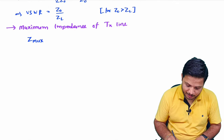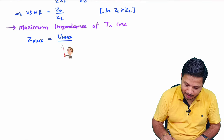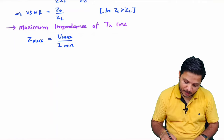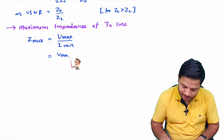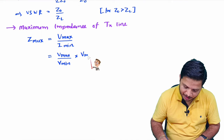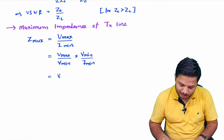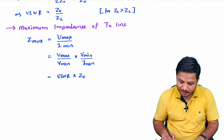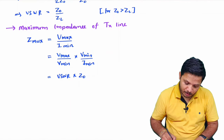Maximum impedance of the transmission line is referred to as Z_max, defined as V_max divided by I_min. To express this in terms of VSWR, multiply and divide by V_min: V_max/V_min is VSWR, and V_min/I_min is Z_0. Therefore, Z_max equals VSWR times the characteristic impedance Z_0.